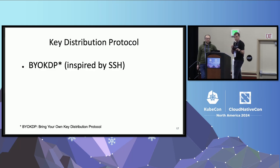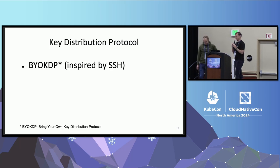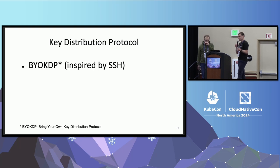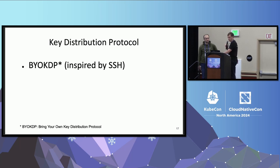The key distribution protocol in WireGuard is inspired by SSH, which means there is no built-in one — it's bring-your-own key distribution protocol. The idea is that the less things you can configure, the less things you misconfigure. Users will find a way to exchange keys if they want to communicate, and in automated environments like Kubernetes, it is really easy to achieve this.